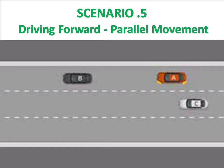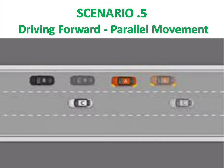Scenario 5: driving forward parallel movement. There are three vehicles — red, black, and white. The red vehicle has put the indicator to go left, while the other two are moving straight. The white vehicle has priority over the red vehicle because it is going straight. Once the white vehicle passes and moves forward, the red vehicle can then move to the left lane.